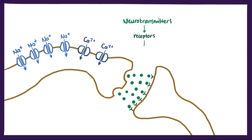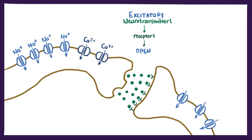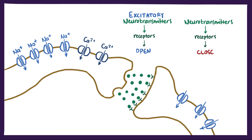Neurotransmitters bind to the receptors and basically tell the cell to either open up the ion channels and relay the electrical message — called excitatory neurotransmitters — or close the ion channels and stop the electrical message, called inhibitory neurotransmitters.